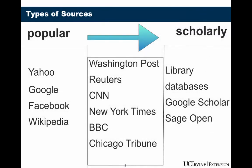In the middle here are news sources. News sources are more scholarly than the popular sources, but not as scholarly as the library databases. In college classes, your teachers may let you use news sources, or they may tell you they don't want you to use those because they're not academic enough.